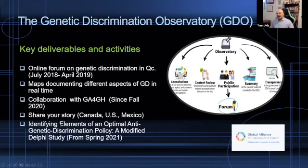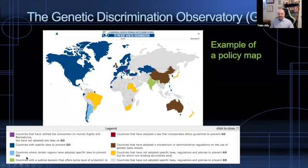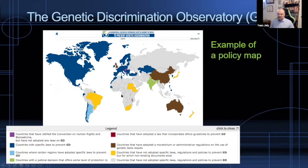Finally, as part of our collaboration with GA4GH, we are currently working on a Delphi exercise to identify elements of an optimal anti-genetic-discrimination policy. This is an example of a map showing all the policies to prevent genetic discrimination around the world. Our maps are fairly simple — we want people to access our features even from a cell phone, so we don't want things that take too much time to load.